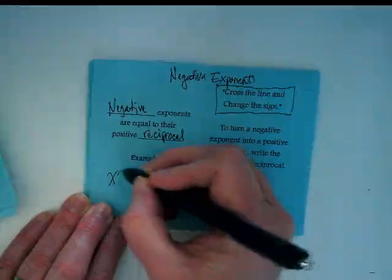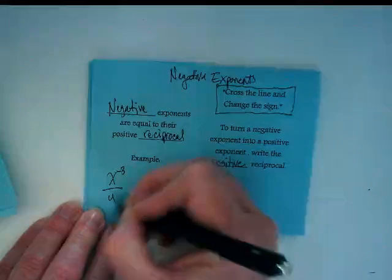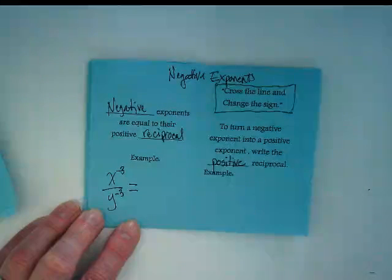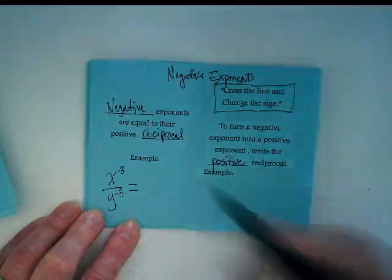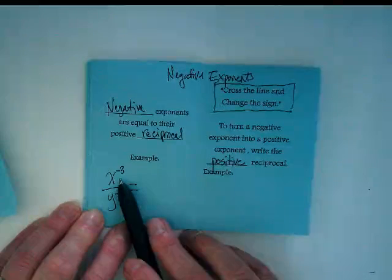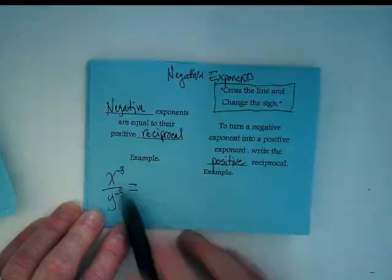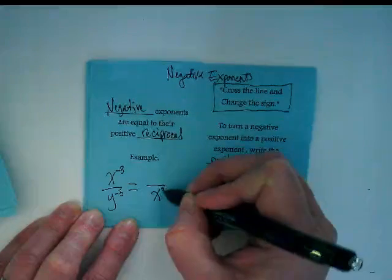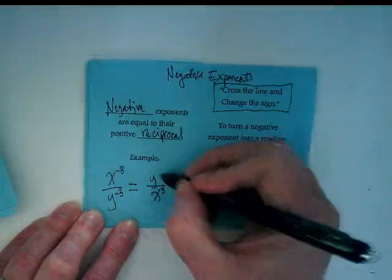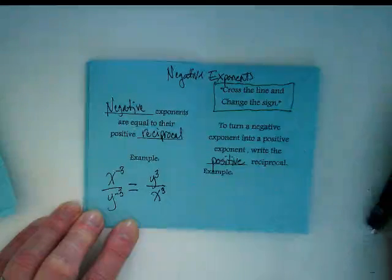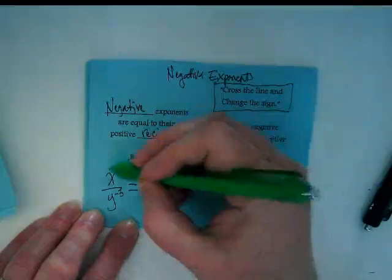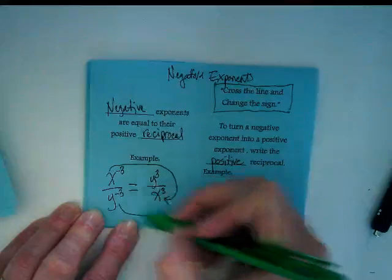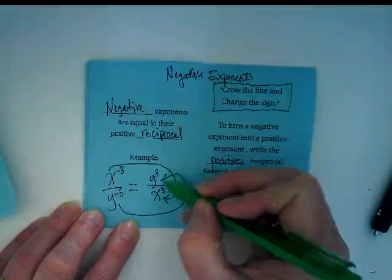I want you to write x to the negative third over y to the negative third. I'm going to cross the line. So this is the numerator. By crossing the line, it's going to become the denominator. And I'm changing the sign to a positive. And the same happens with the negative in the denominator. So this one has its positive reciprocal here. And this one has its positive reciprocal here.